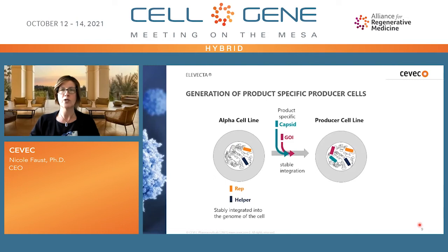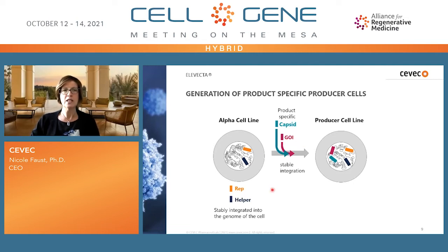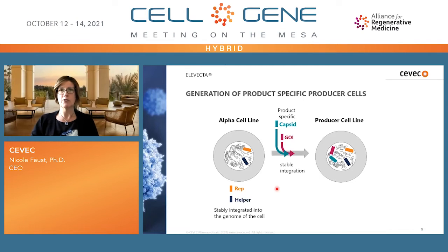For AAV, each product has specific components: one is the capsid, and the other is the gene of interest — the therapeutic gene. What we have done is established an alpha cell line that carries all other components required, namely REP and adenoviral helper genes, both in a stable form. These cells have been extensively characterized and banked. For each specific project, we bring in the serotype-specific capsid and the therapeutic gene to generate the full producer cell line.